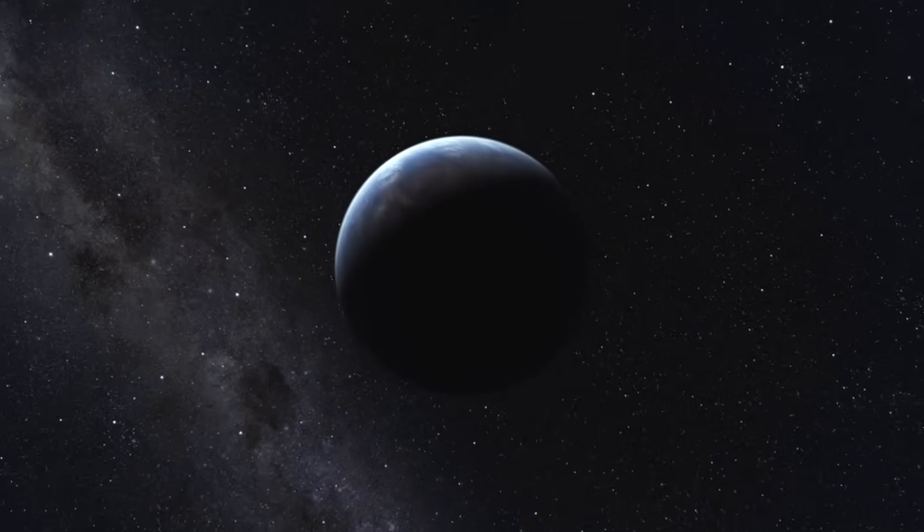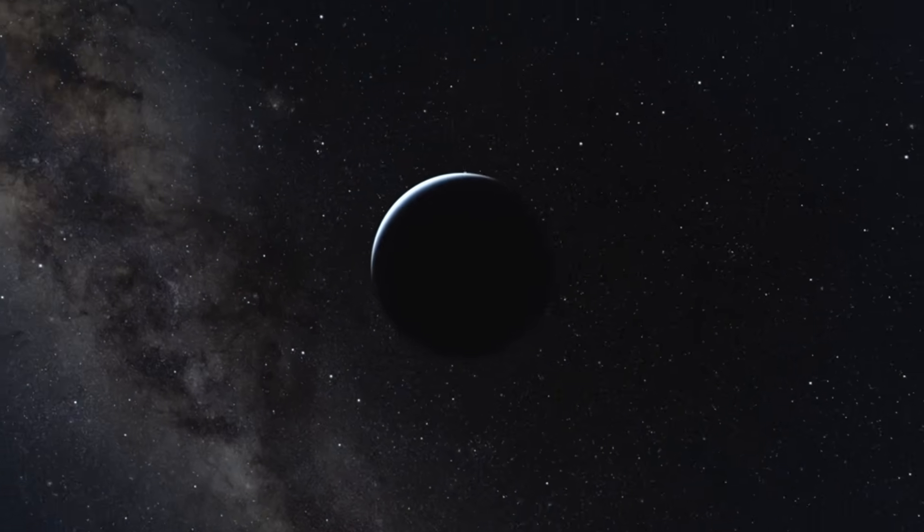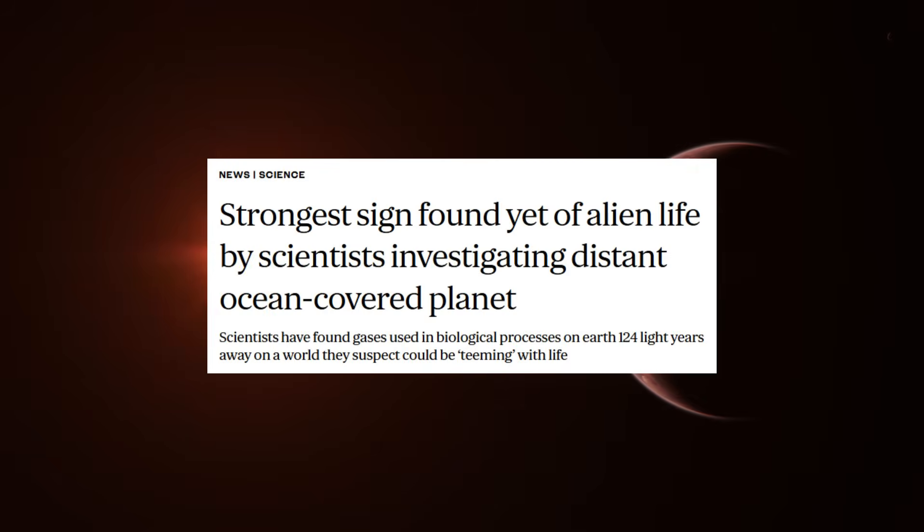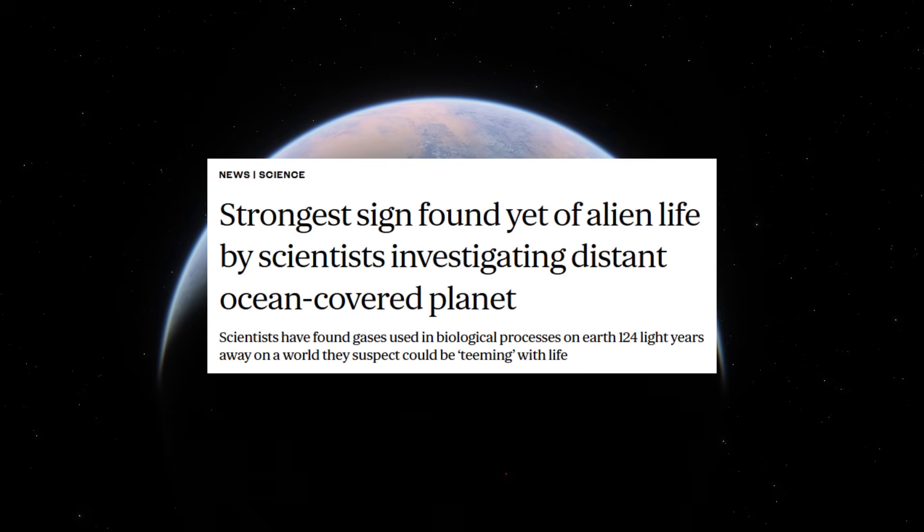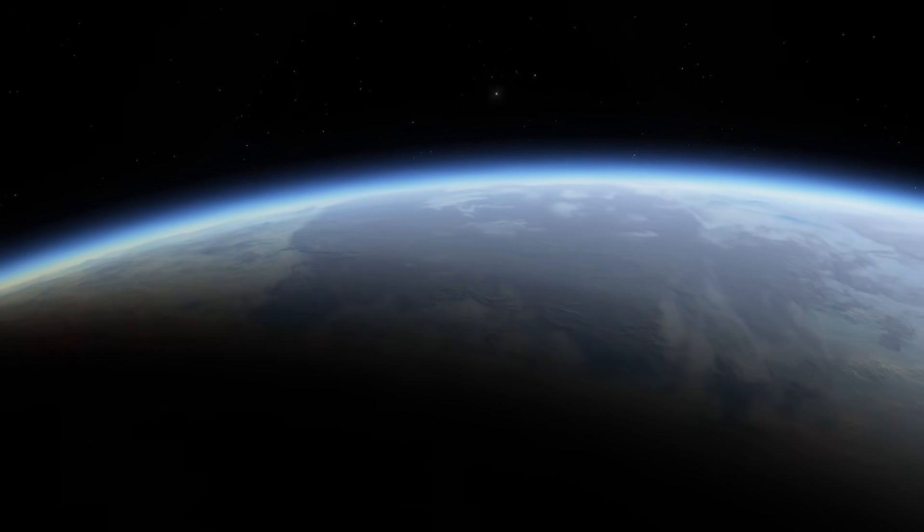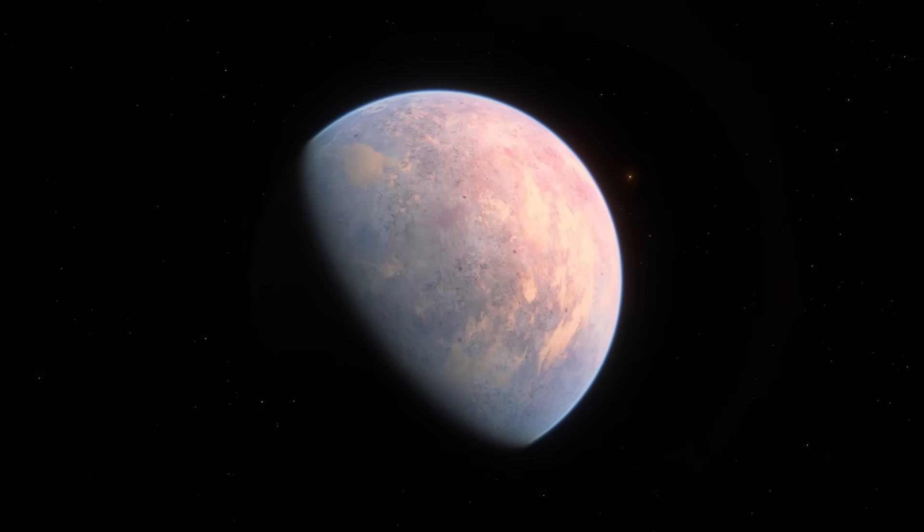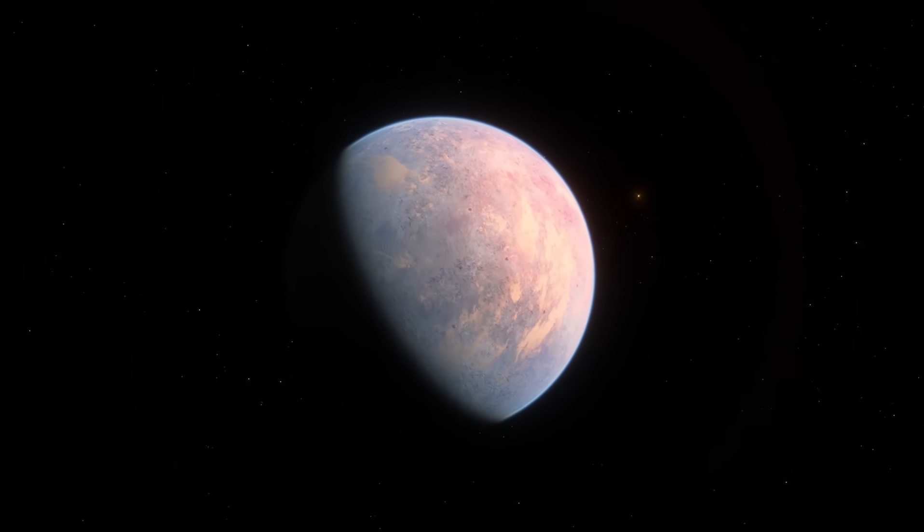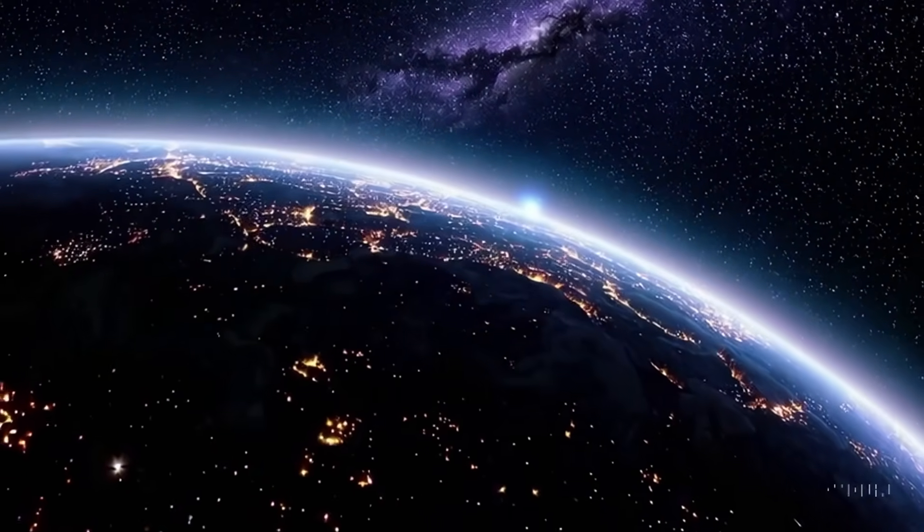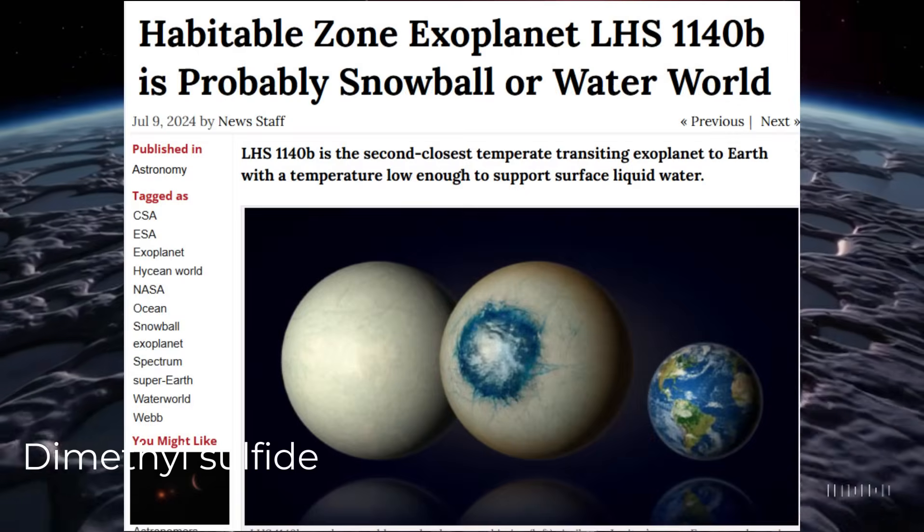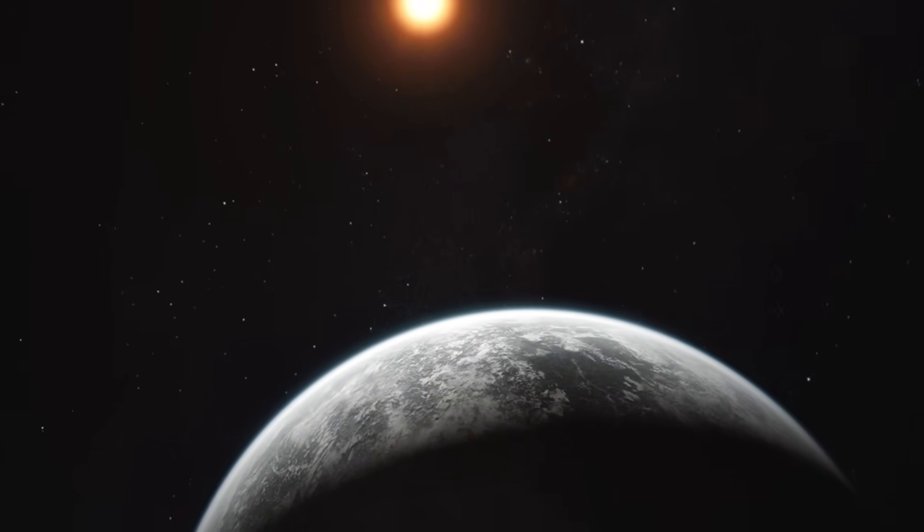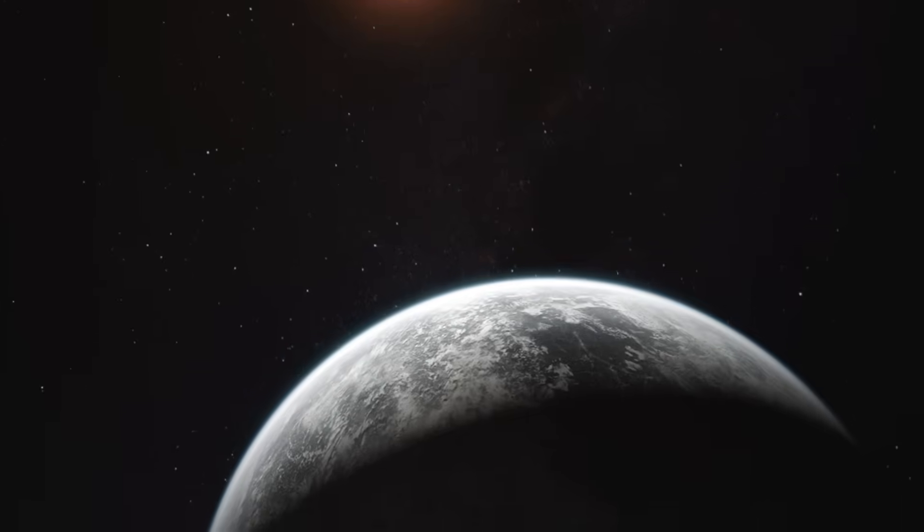On April 17th of this year, NASA released data that could completely change our understanding of space. Signs of life were discovered on a distant planet with a probability of 99.7%. This planet is K2-18b, located 124 light years away from us. In its atmosphere, chemical compounds were detected that on Earth are almost always associated with living organisms. Moreover, their concentration is a thousand times higher than on our planet. If these substances are truly the result of biological activity, then right now there may not just be life out there, but a thriving ocean of biological diversity.